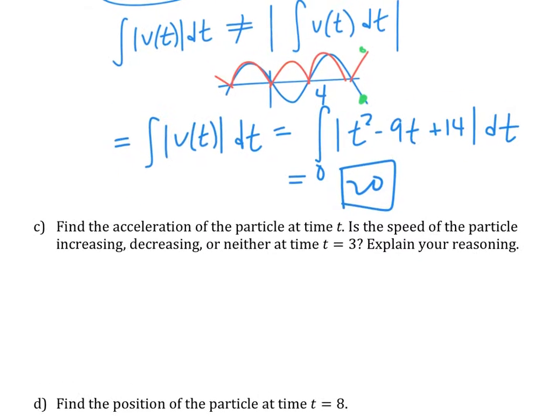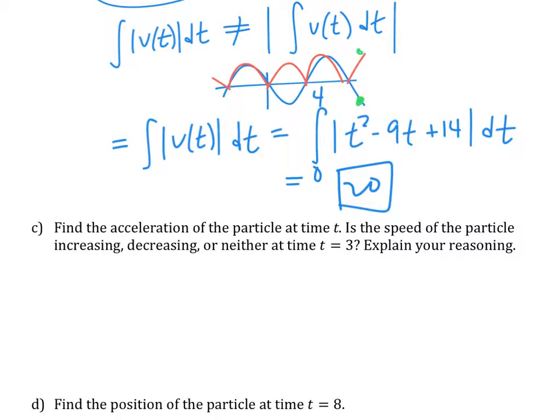Next, find the acceleration of the particle at time t. What is the speed of the particle increasing, decreasing, or neither at time 3? I think you guys are pretty good at this. So find the acceleration and answer the question, is the speed increasing, decreasing, or neither? I guess if it's equal to zero, it would be neither. Explain your reasoning.